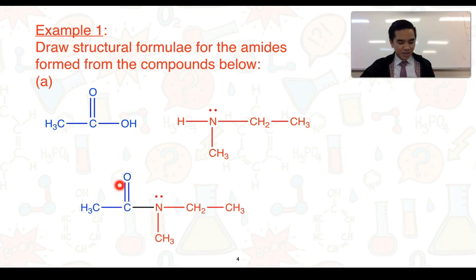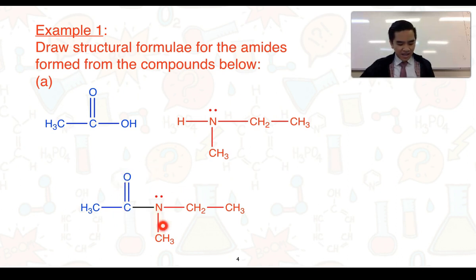We can see the carbon-to-oxygen double bond followed by that new carbon-to-nitrogen bond. This entire section — these atoms — are what make up our amide functional group.